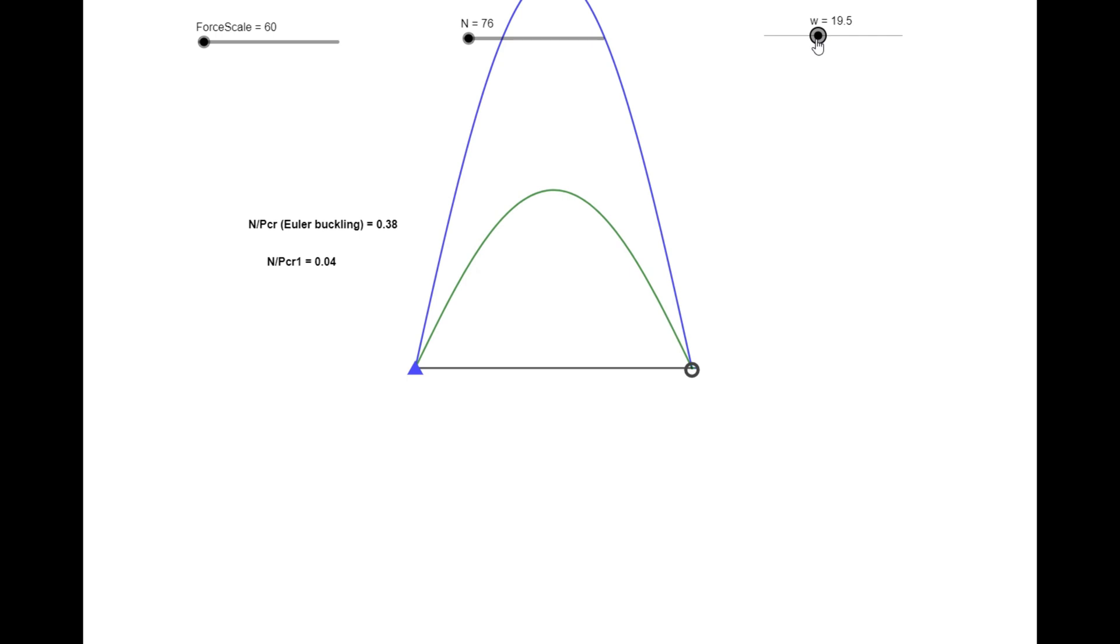What happens if the compressive normal force approaches Euler buckling? And what happens if the tensile force approaches the Euler buckling force? We see that as the force approaches the Euler buckling critical load, the beam column buckles in compression. While in tension, nothing really happens. This is because the beam column cannot buckle under tension.